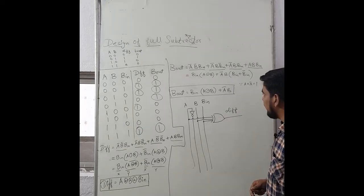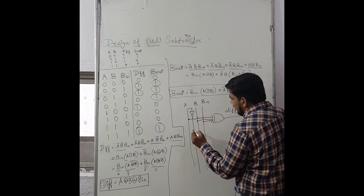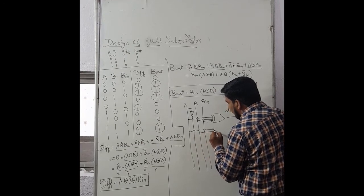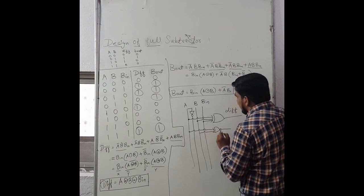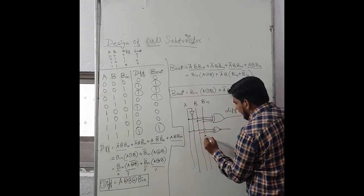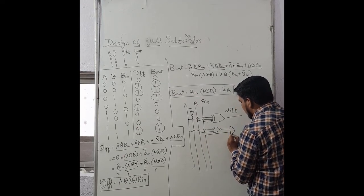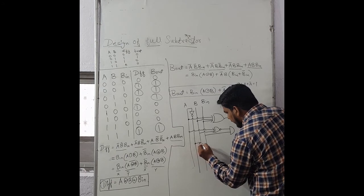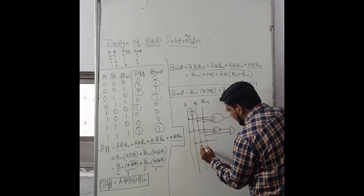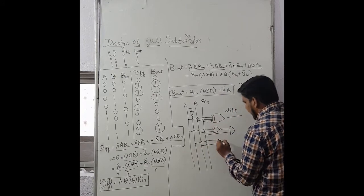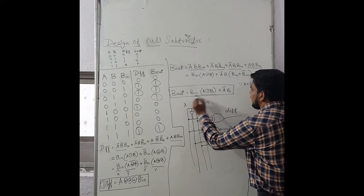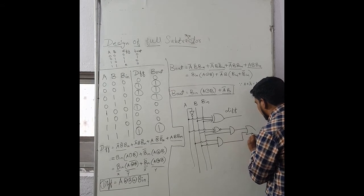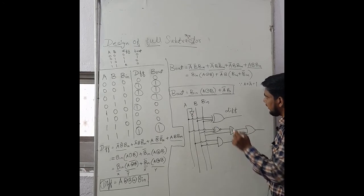For the B_out expression, A and B are first applied to an XOR gate. The output is then ANDed with B_in. Separately, A_bar is taken from the NOT gate output, and A_bar and B are ANDed together. Finally, the outputs of both AND gates are combined using an OR gate to produce B_out. This completes the circuit implementation of the full subtractor.